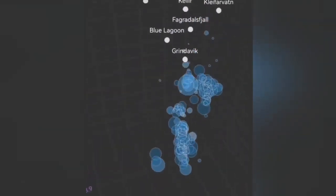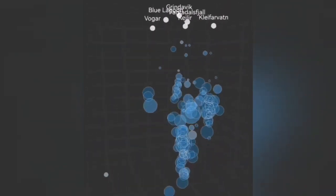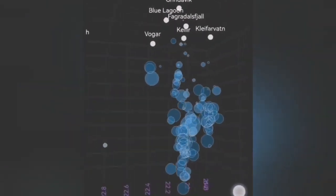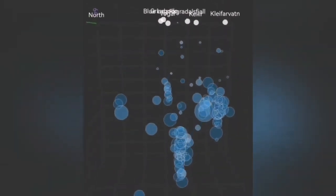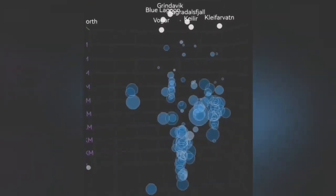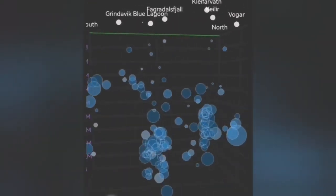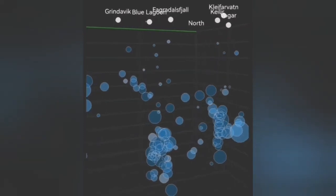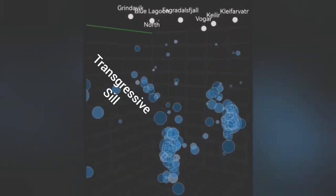For example, when I look at the depth chart of the earthquakes, you can see a tongue of earthquakes at an angle moving from what is practically under Svartsengi toward Grindavik.